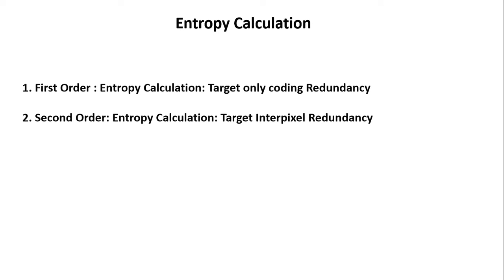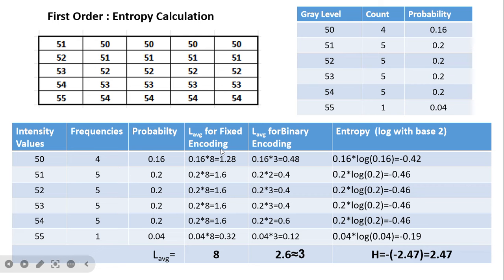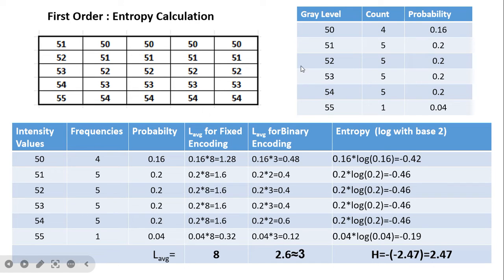Entropy can be calculated in first order and second order. First-order entropy targets only coding redundancy, while second-order entropy targets inter-pixel redundancy. Consider a 5×5 image with 25 pixels having intensity values 50 to 55. Looking at the distribution, we can see that pixels repeat with most values occurring four or five times. We calculate the intensity values, their frequencies, and their probabilities.